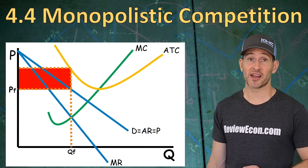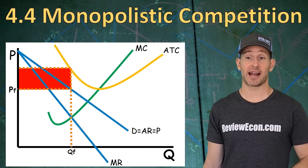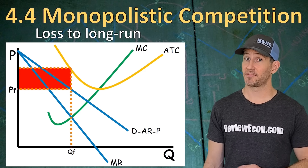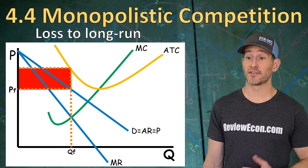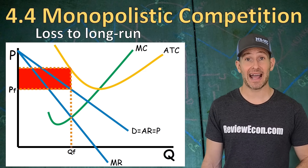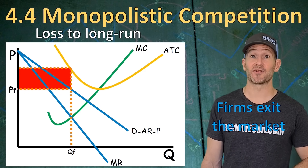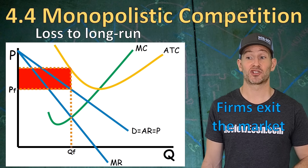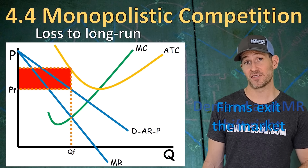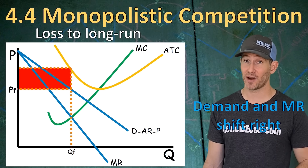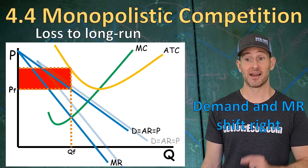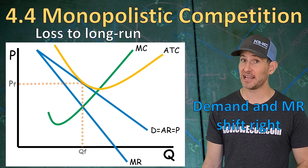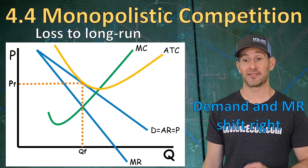This firm, on the other hand, is earning economic losses — but that's only in the short run. In the long run, firms are going to exit the market trying to get away from those economic losses. That will shift the marginal revenue curve and the demand to the right, causing the firm to break even again in the long run.